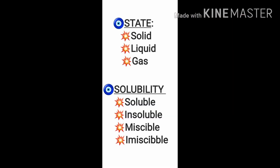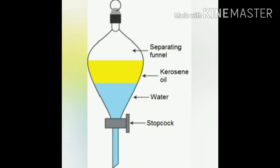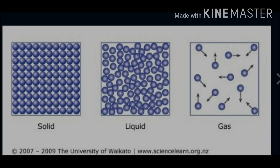We have studied about solid, liquid, and gas states, and understood soluble, insoluble, miscible, and immiscible substances, and how these properties are useful in daily life — for example, immiscible substances like kerosene and water can be separated. The molecular arrangement of solid, liquid, and gas differs: in gas, molecules move freely, while in solid they are compactly packed. This affects the nature of the substance.